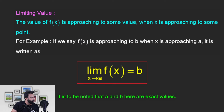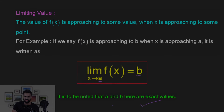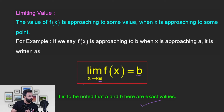यहाँ पर यह बात ध्यान रखनी है कि x, a के equal नहीं है — x, a के बिलकुल close है, छोटा भी हो सकता है, बड़ा भी हो सकता है। और जब x, a के बिलकुल close है, तब fx, b के close है — छोटा भी हो सकता है, बड़ा भी हो सकता है। लेकिन यहाँ पर यह जो a और b हैं, these two are exact values। यह destination definite होनी चाहिए। x ने अपनी destination को अभी तक achieve नहीं किया है; उसी तरह fx भी b के equal नहीं हुआ है, क्योंकि x, a के equal नहीं हुआ है।